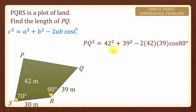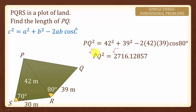Simplifying the right-hand side, we will have PQ squared equals to 2716.12857. To find PQ, we shall square root both sides to give us PQ equals to 52.1 meters, rounded off to 3 significant figures.